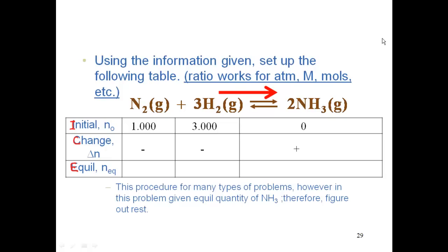Because it's shifting to the right, I'm consuming up my reactants. These are going down in concentration while those are going up for my products. So I will symbolize that by my negatives on my change in number of moles and my positive for my change in moles of my ammonia.